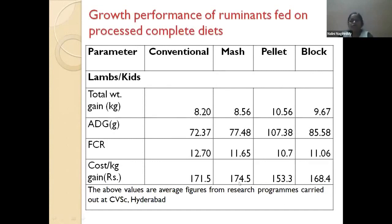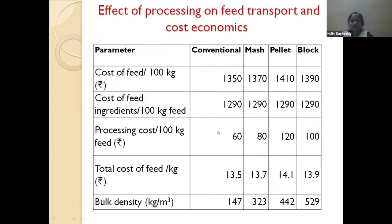Block making has a better cost-benefit ratio over mash and conventional feeding. Regarding cost economics, feed cost ranges from 9 to 15 rupees per kg depending on the type of crop residue used and its local availability. Processing cost is higher for pelleting due to steam generation and high motor horsepower requirements, but this is compensated by higher average daily gain and better feed efficiency. For bulk density, block making is most beneficial and most economical for transport.